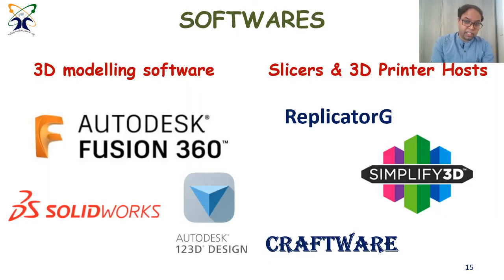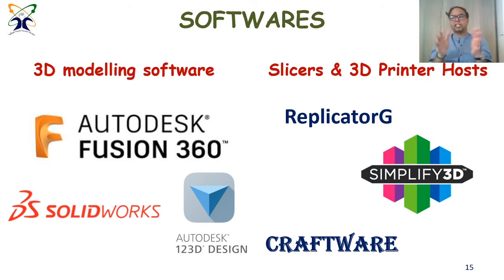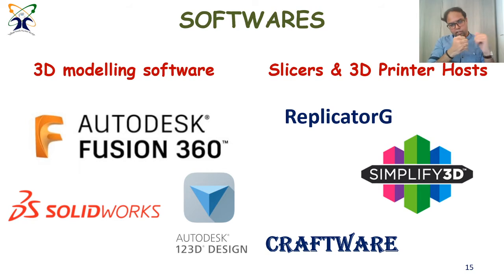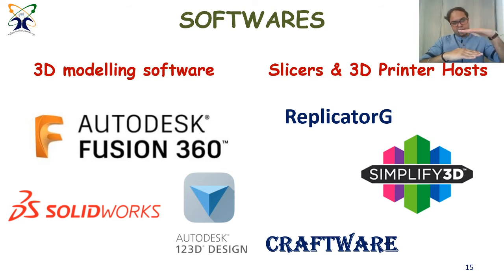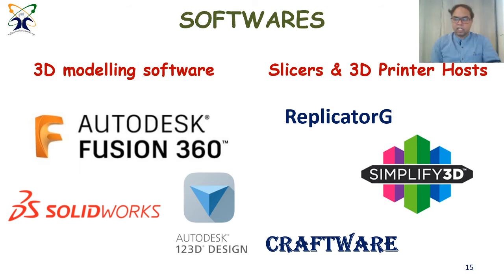There are software tools used for 3D printing. On the left you have 3D modeling software like SolidWorks, KTR, Autodesk Fusion, and Autodesk 123D Design, where you create your 3D model and design whatever you want to print. Then you have a slicer and 3D printer host which takes this model, slices it down layer by layer, and feeds each slice to the printer. You can receive your object from bottom to top or sometimes top to bottom depending on the technique.